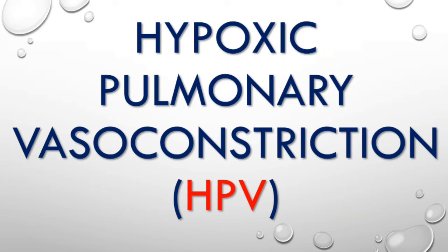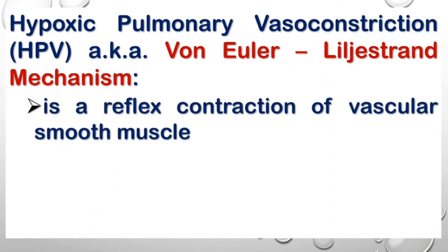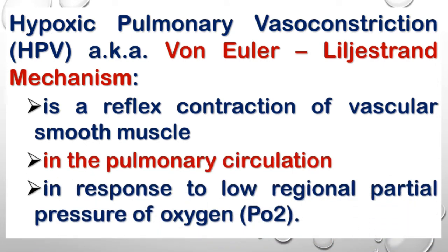In this video we will talk about hypoxic pulmonary vasoconstriction, or HPV in short. As the name suggests, HPV is vasoconstriction in the pulmonary circulation due to hypoxia. So if there is poor or absent ventilation in any part or region of the lungs, the blood vessels in that part will constrict, limiting blood supply to that region, making more blood available for gas exchange in other areas where ventilation is good. HPV is a compensatory mechanism in which blood supply is restricted to non-ventilated areas so that more blood is available for gas exchange in ventilated areas.